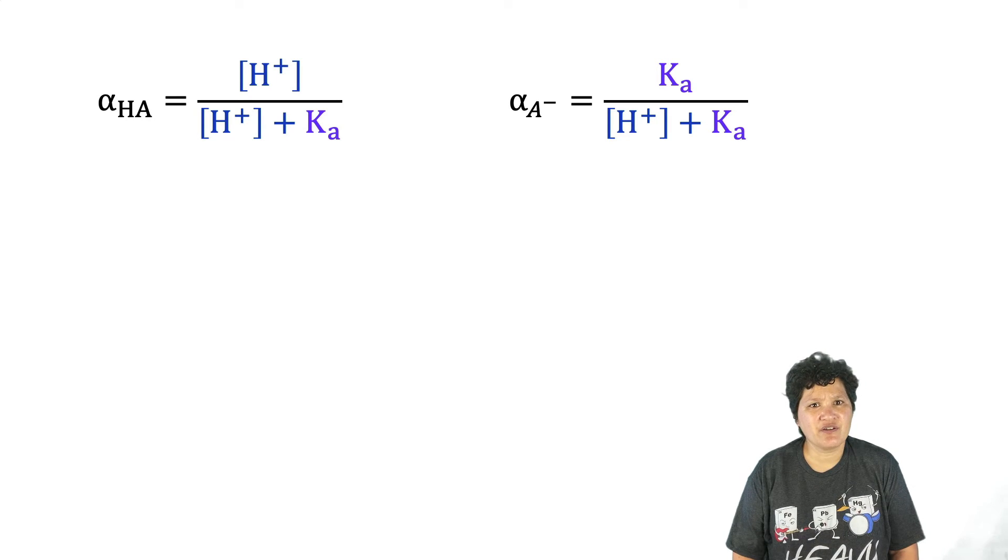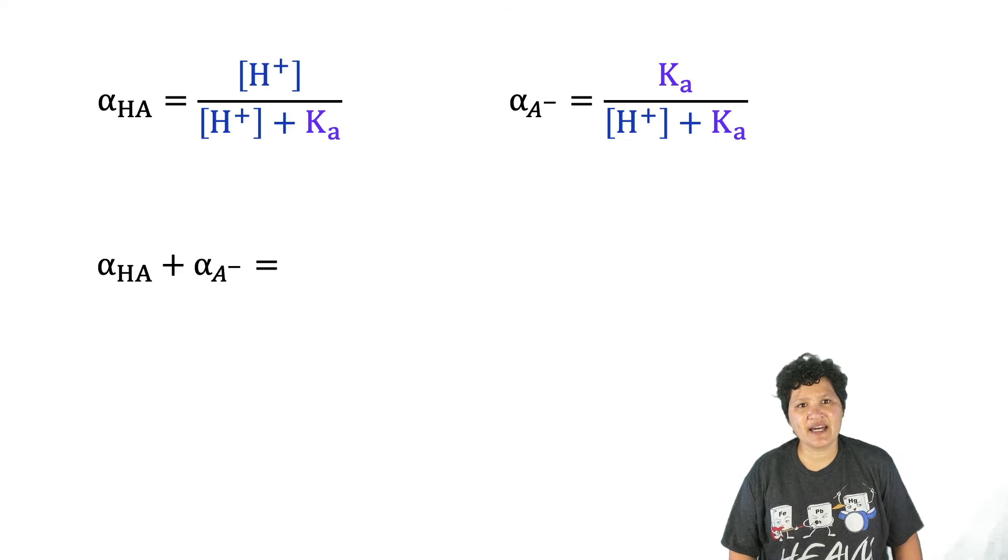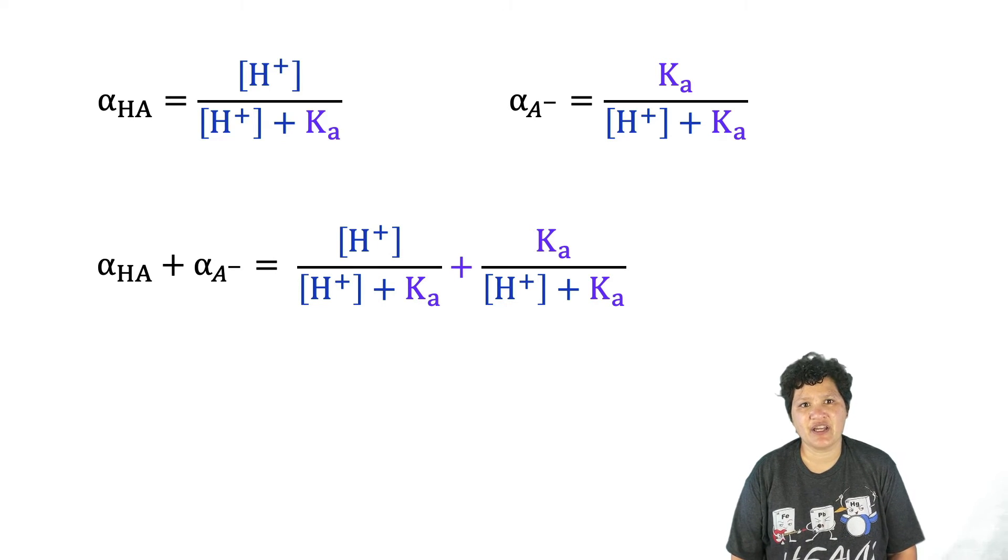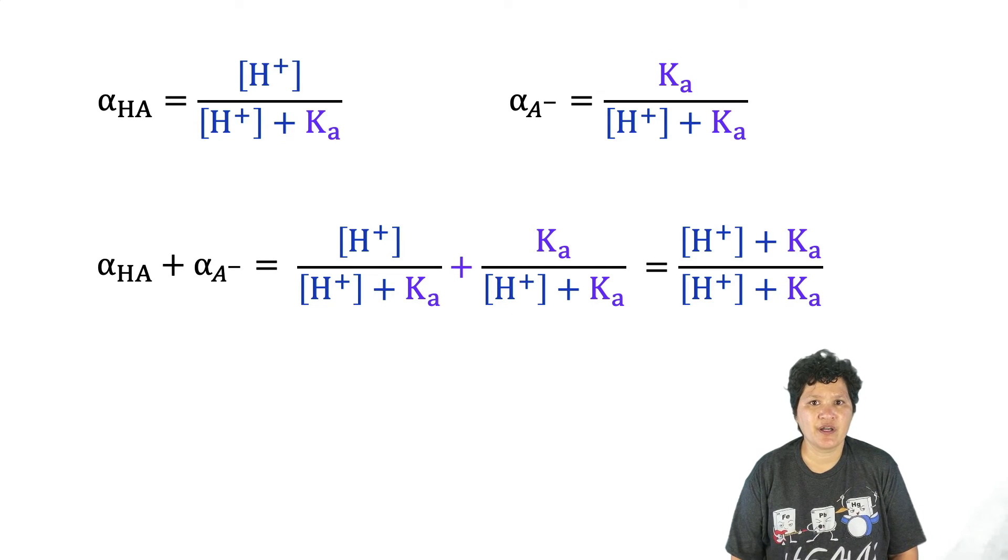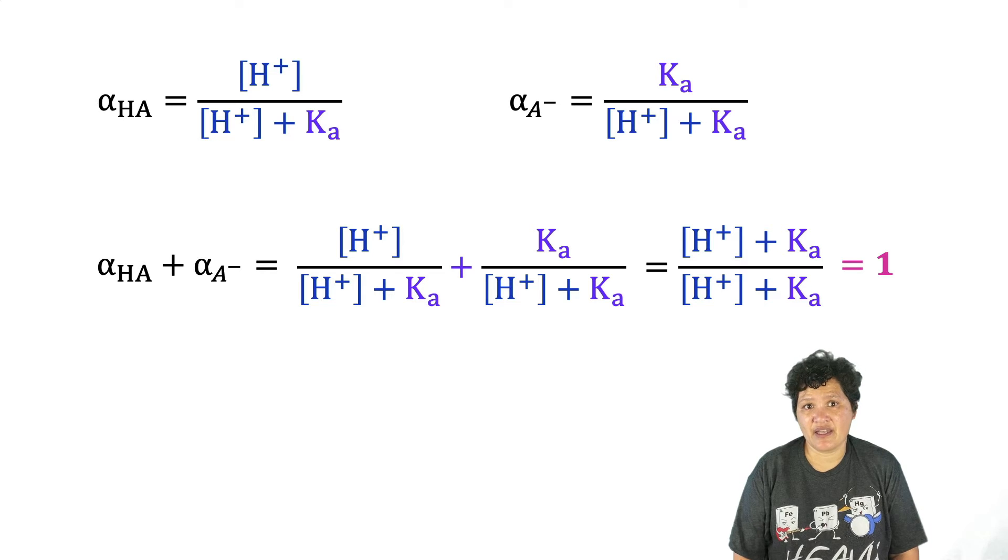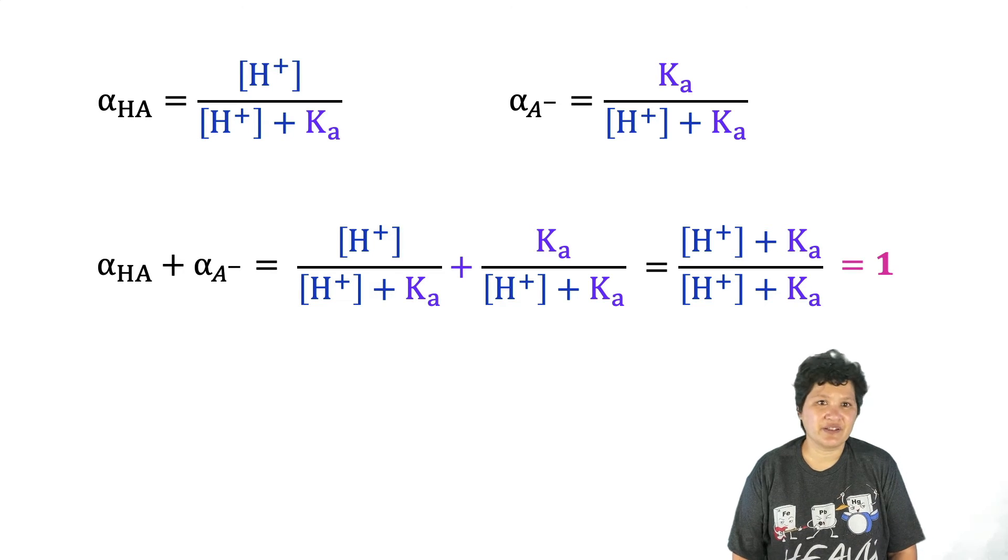The first thing I want to notice is that whether we're talking about the acid or the conjugate base, the fractional composition of each component isn't based on the concentrations of A- or HA at all. It's based on the Ka of the acid and the H+ concentration of the solution, which of course is related to the pH. And the second thing I want you to notice is that if we add up the fractional compositions of HA and A- as we did before, using these expressions and simplify it, it still equals 1.